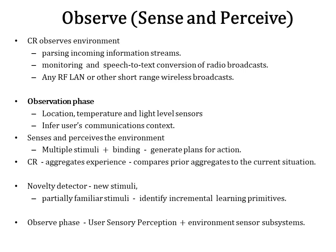Cognitive radio continuously aggregates experience and compares prior aggregates to the current situation — a cognitive radio aggregates experience by remembering everything. The computational architecture for remembering and rapidly correlating current experience against everything previously known is the core capability of cognitive radio architecture. A novelty detector identifies new stimuli using the new aspects of partially familiar stimuli to identify incremental learning primitives. The observe phase comprises both the user-sensory perception and the environment sensor subsystems, i.e., RF and physical subsystems.